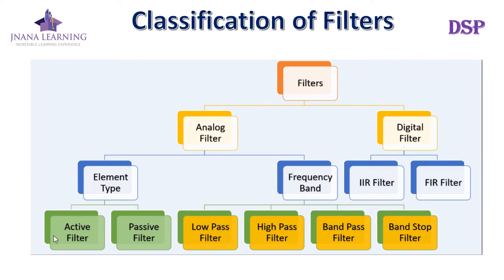Under analog filters, based on element type, we have active filters and passive filters. Active filters make use of active elements such as transistors or op-amps, in addition to resistors and capacitors in their filter design. Passive filters are those built with passive components like resistors, capacitors, and inductors.